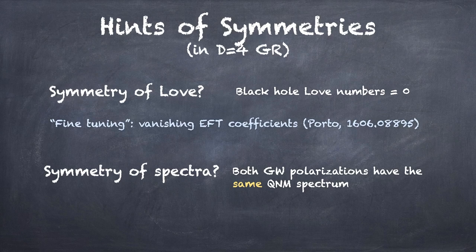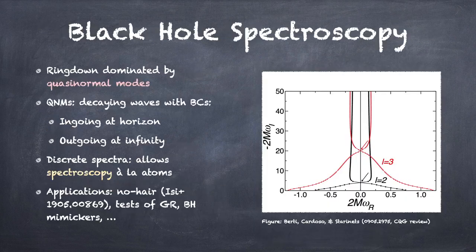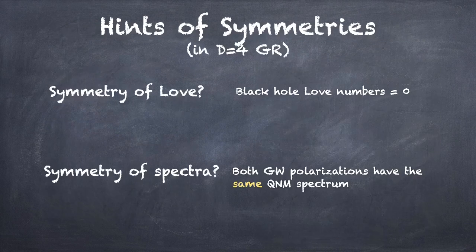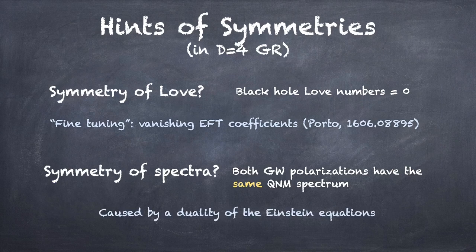As for the black hole spectroscopy, well, the graviton has two polarizations. You'll recall that I showed these quasi-normal modes, and I have to tell you which polarization this is for, and it turns out that it's the same for both, which is not exactly obvious. And it turns out to have its roots in a deep and kind of hidden duality of the equations that was shown by Chandrasekhar.